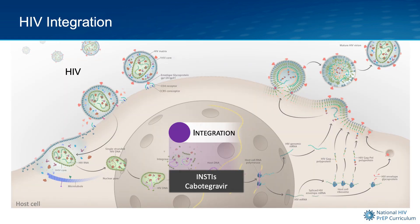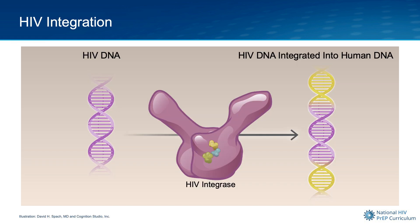Now let's look at how cabotegravir works, but first it's important to review the HIV integration step. The key concept with HIV integration is that newly formed HIV DNA is permanently stitched into human DNA. This process depends on the HIV integrase enzyme.